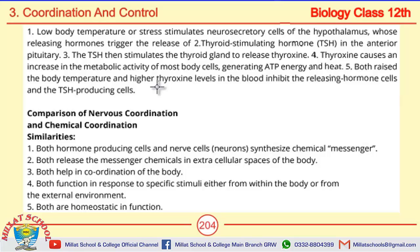When TSH stimulates the thyroid gland to secrete thyroxin, the metabolic rate increases in body cells, generating ATP and heat. This raises the body temperature, which was initially low — the condition that started the mechanism. Now with higher body temperature and higher thyroxin levels, the releasing hormone and TSH-producing cells are inhibited, thus completing the negative feedback loop.